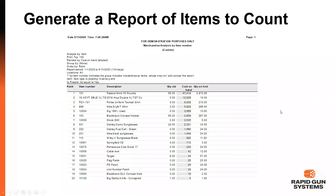Once we hit preview or print, this is exactly how the report will look. On the left side you can see the item numbers and descriptions, and all the way to the right you can see the quantity on hand. When going through the store, you compare the quantity on hand shown on the report against the count you've physically made.